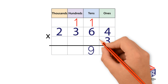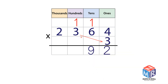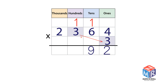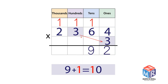Multiply the 100s. 3 × 3 hundreds equals 9 hundreds. Add the regrouped hundreds: 9 hundreds plus 1 hundred equals 10 hundreds. Regroup 10 hundreds as 1 thousand and 0 hundreds.